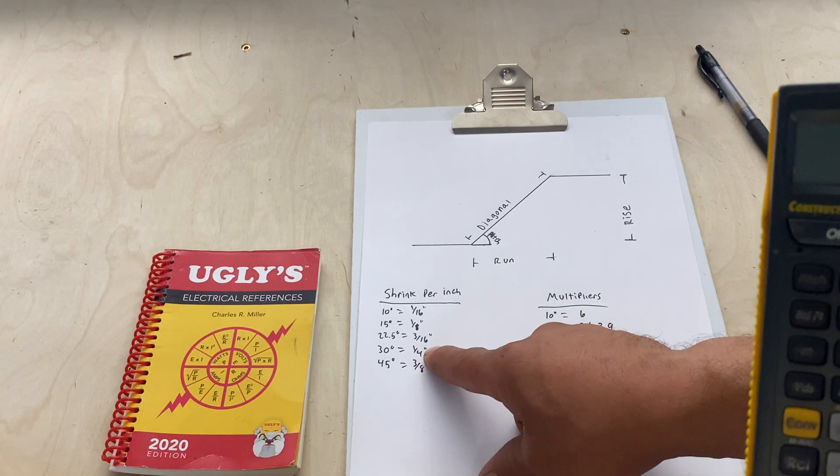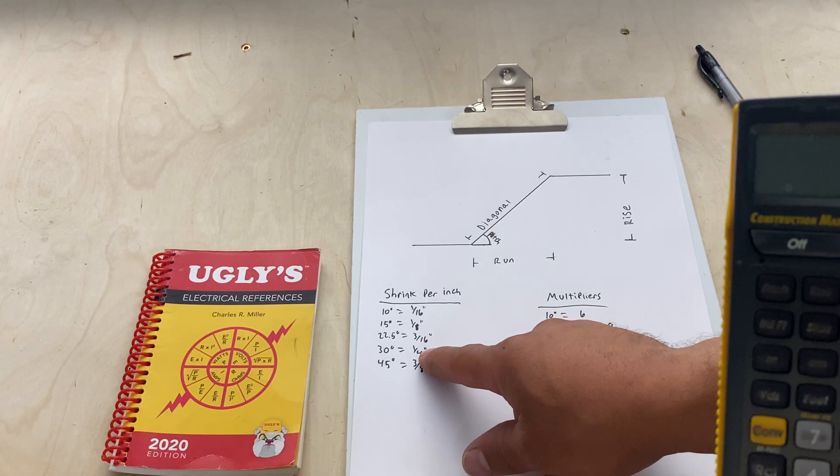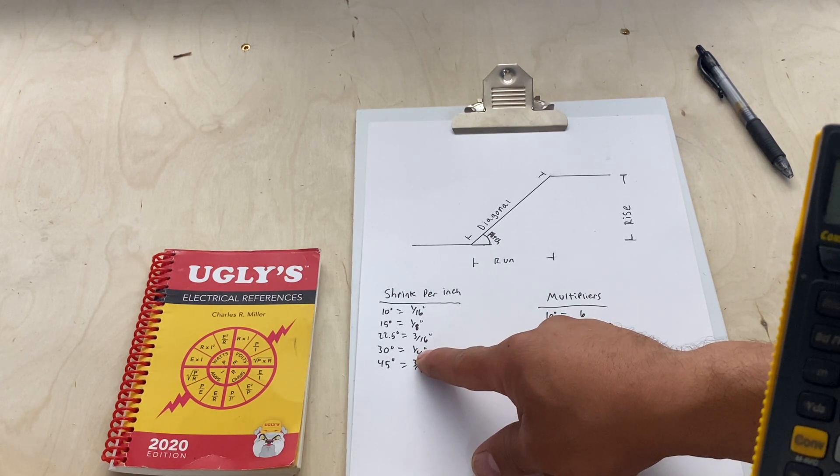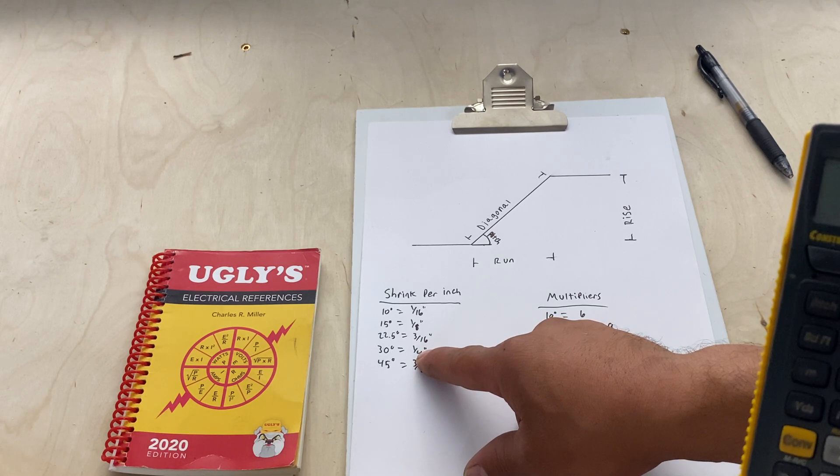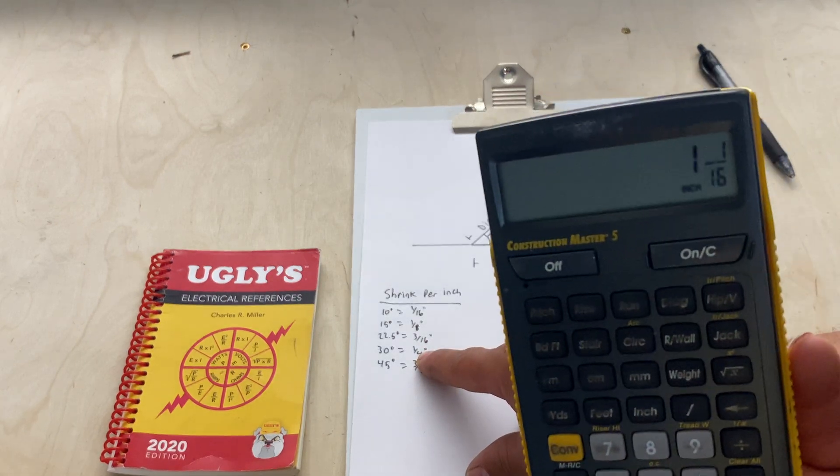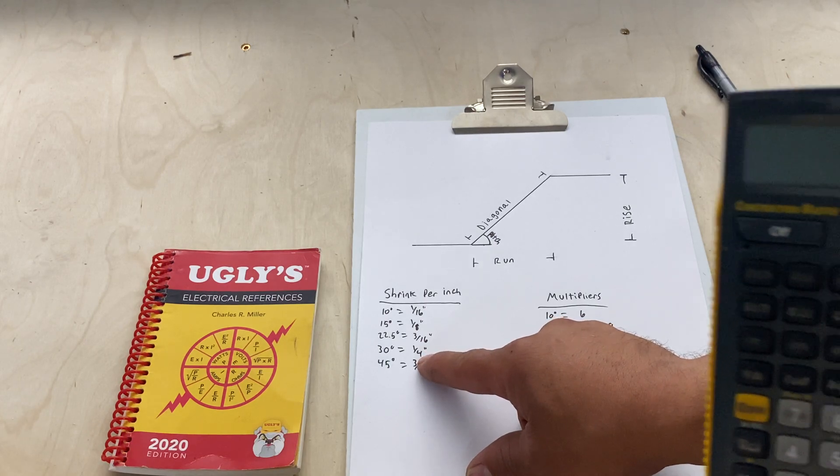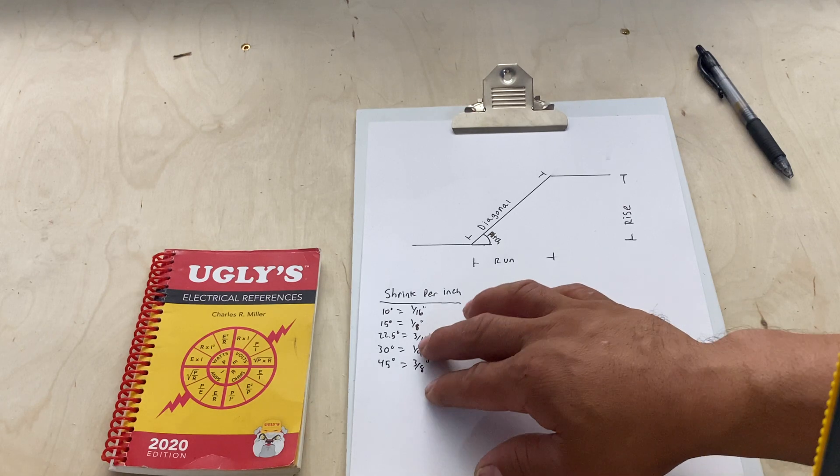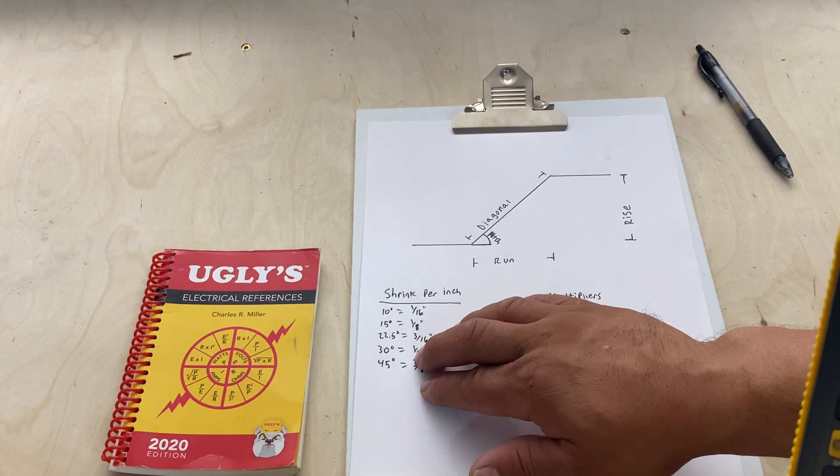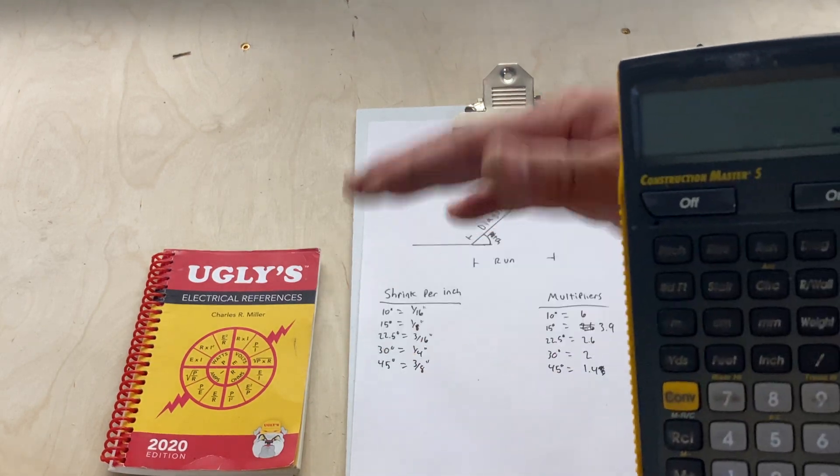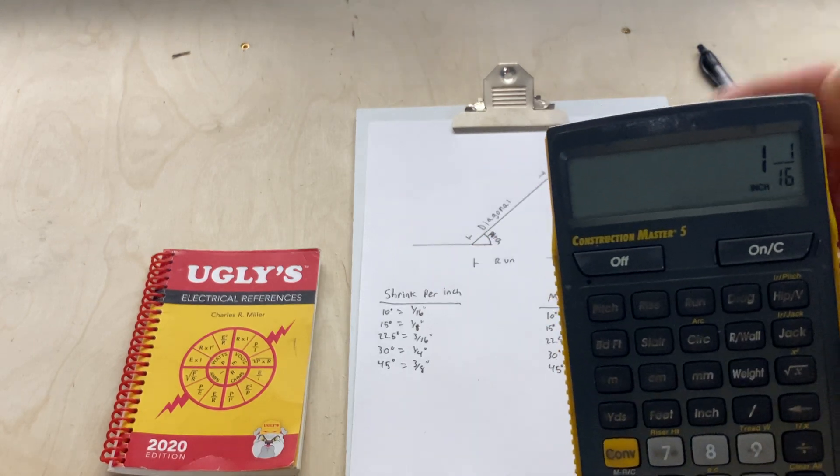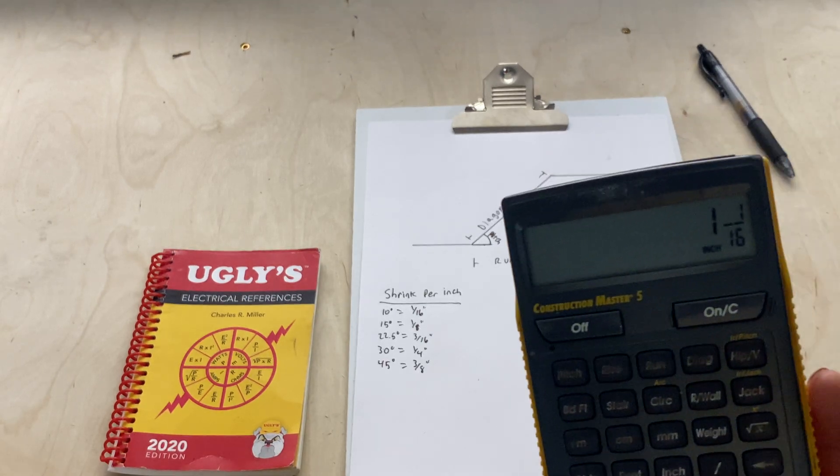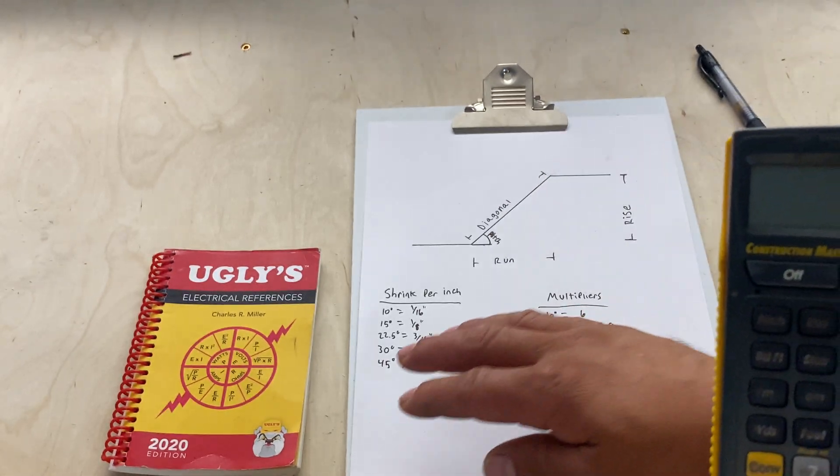We did a four-inch rise at 30 degrees. Four times a quarter should have been one inch. We got one and a sixteenth, it's only a sixteenth more. That's where this comes into play. This gets you by, it's not 100% accurate because the more, the taller the offset, the more it takes into effect. So this calculator is 100% accurate, the chart gets you by.